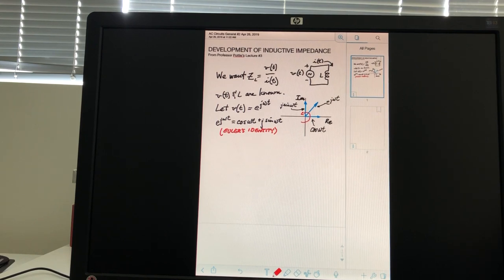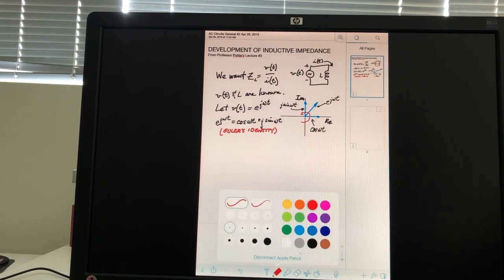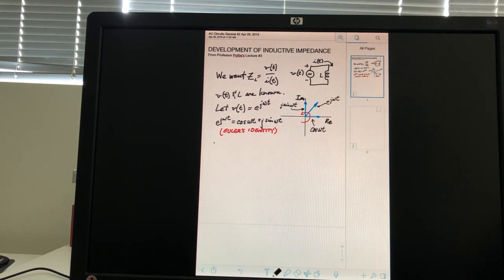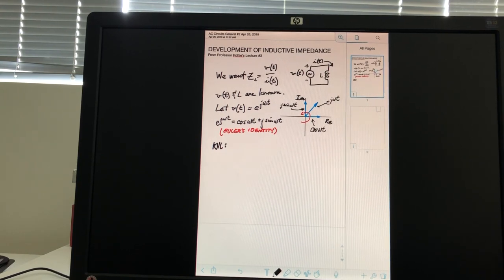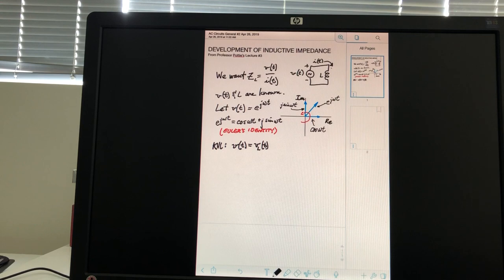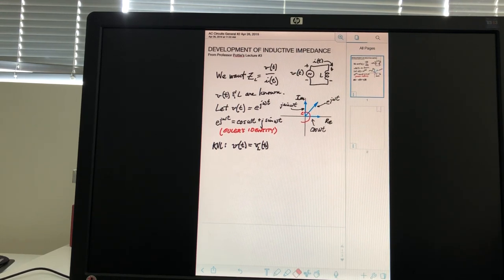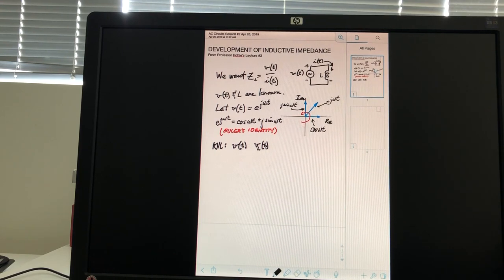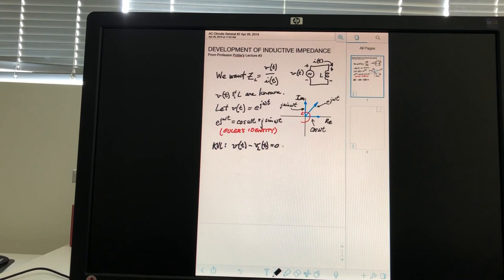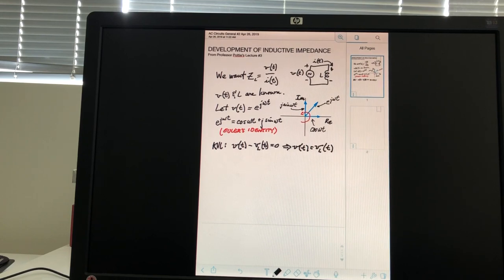we can start by writing a KVL equation. So, let's write KVL, and we can say, well, because obviously, if they are connected like this, we have plus and minus, and so, I'm going to say that this is V of T minus V sub L of T equals zero, and that means that we can say V of T equals V sub L of T. All right.